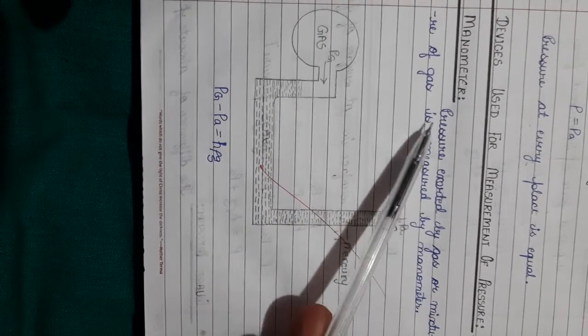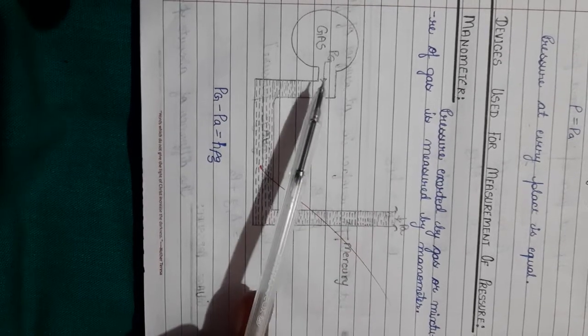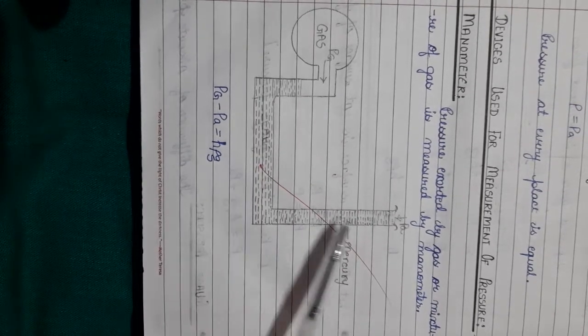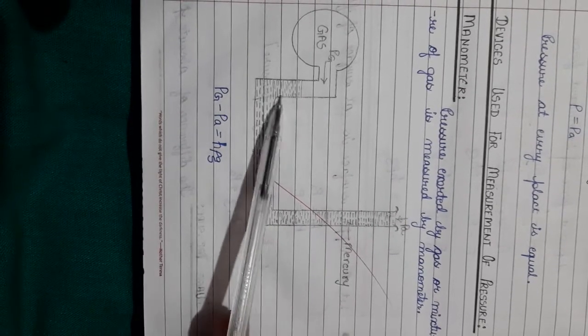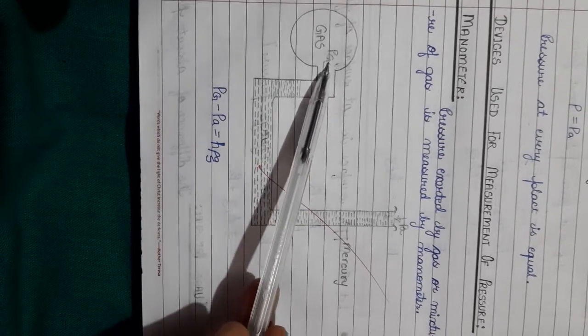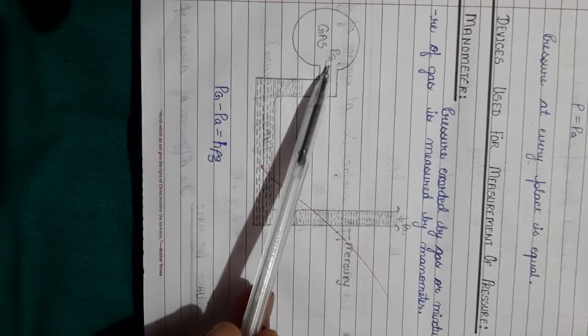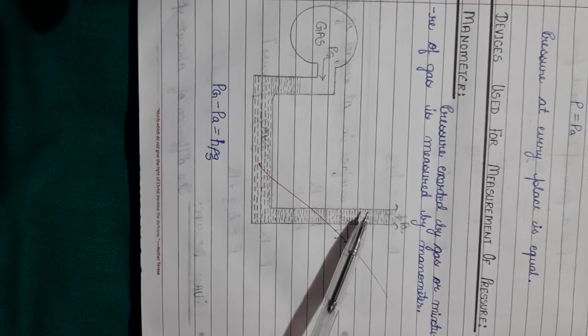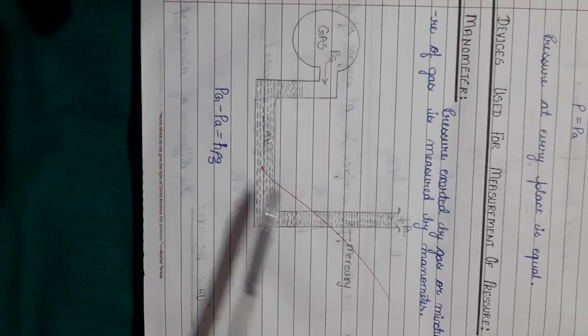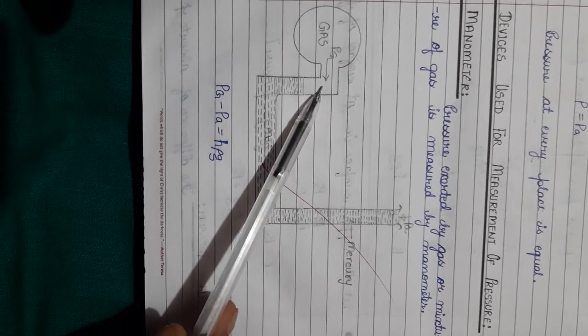The first device is called a manometer. A manometer is an open tube that is U-shaped, open from both sides. One end has the gas whose pressure you have to find out. The other side remains open to atmosphere. The pressure of the gas minus pressure of atmosphere will be equal to h × ρ × g.